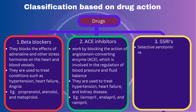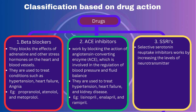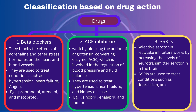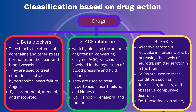SSRIs: Selective serotonin reuptake inhibitors work by increasing the levels of the neurotransmitter serotonin in the brain. SSRIs are used to treat conditions such as depression, anxiety, and obsessive-compulsive disorder. Examples are fluoxetine, sertraline, and citalopram.